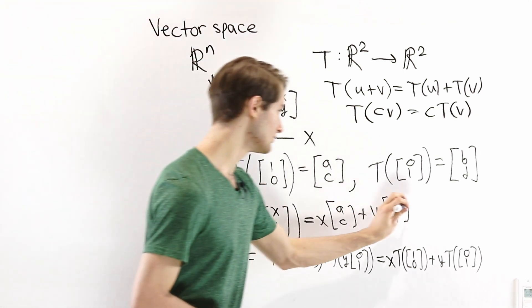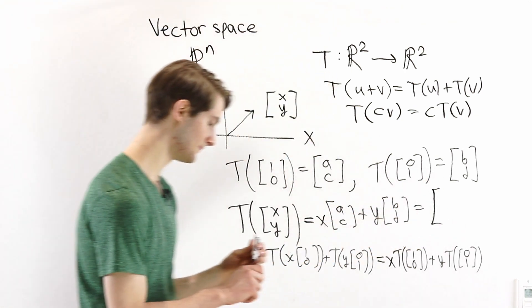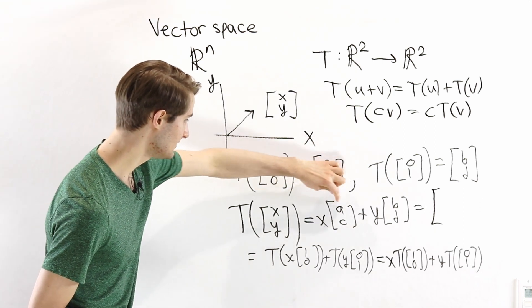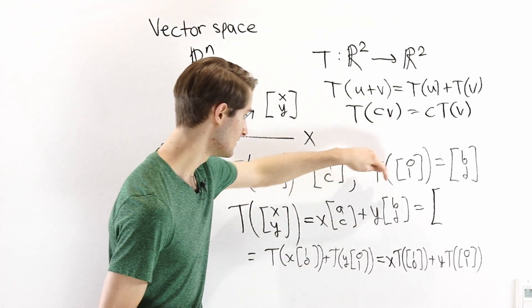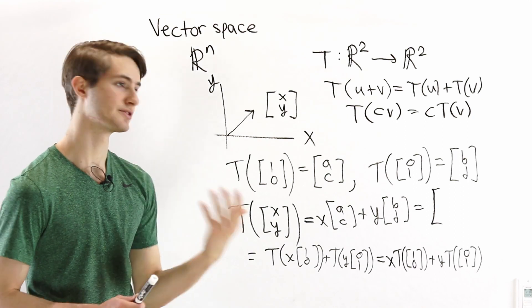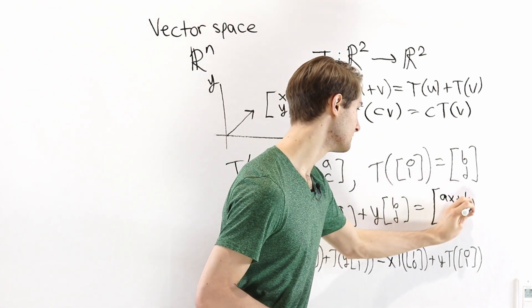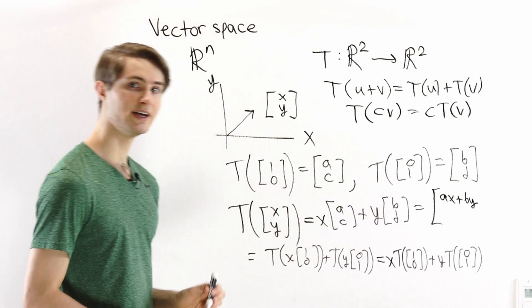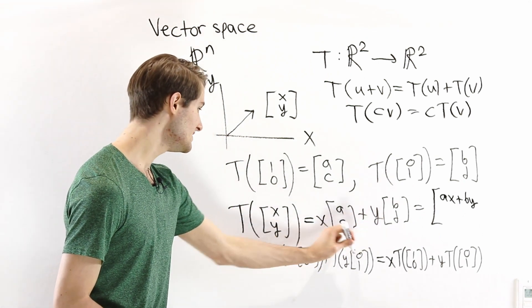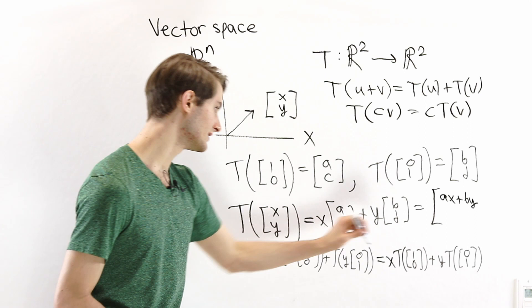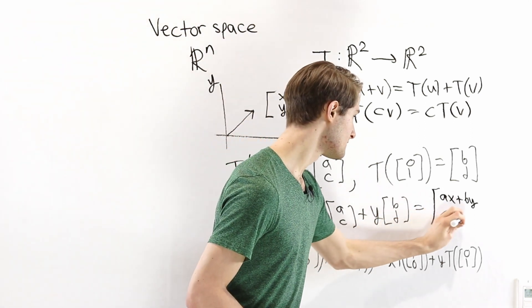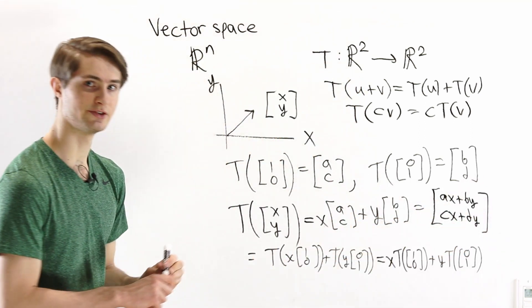And then we can put these together into one big vector, because we're going to have a times x plus b times y. That's going to be our x component, so ax plus by up here. And then for the second component, we're going to have c times x plus d times y. And look at that, that's the answer.